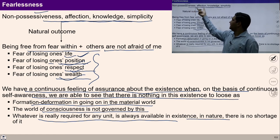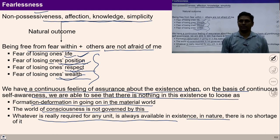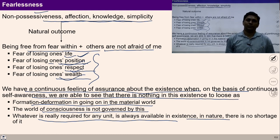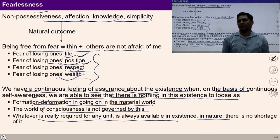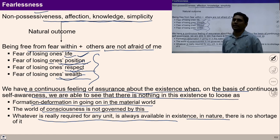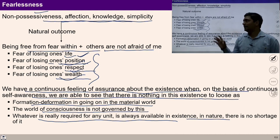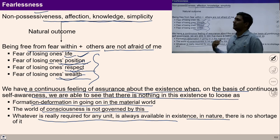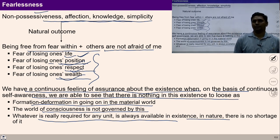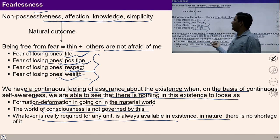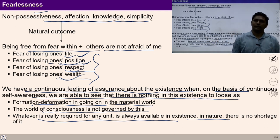With this formulation of non-possessiveness, affection, knowledge, simplicity and fearlessness, life may be lived in a fulfilling manner. With this understanding, there is harmony in society, we become cooperative for each other, and we are able to see our participation with each other. This formulation gives us a way to live a fulfilling life and to ensure harmonious social structures. It is basically helping us to understand harmonious life and our participation for a harmonious society.